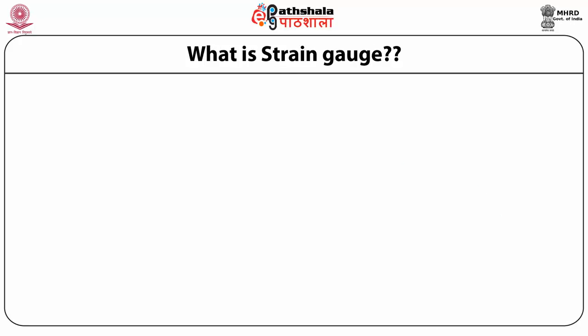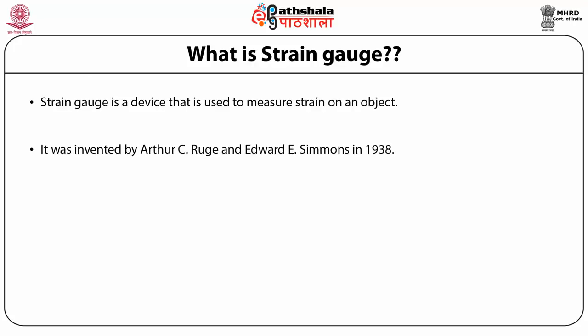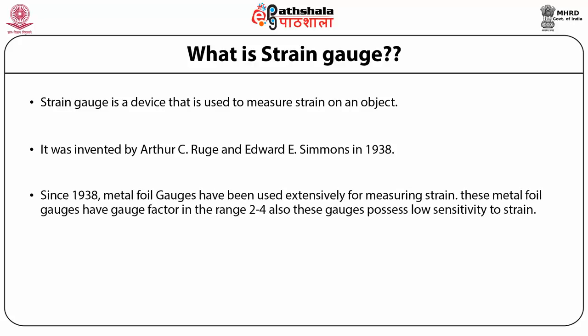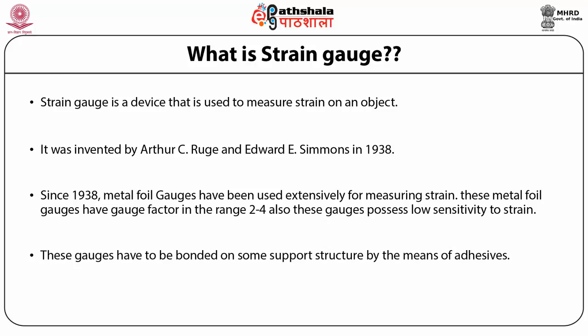Let's discuss what is a strain gauge. A strain gauge is a device used to measure strain on an object. It was invented by Arthur C. Roke and Edward E. Simons in 1938. Since 1938, metal foil gauges have been used extensively for measuring strain. These metal foil gauges have a gauge factor in the range of 2 to 4 and possess low sensitivity to strain. These gauges have to be bonded on some support structure by means of adhesives.